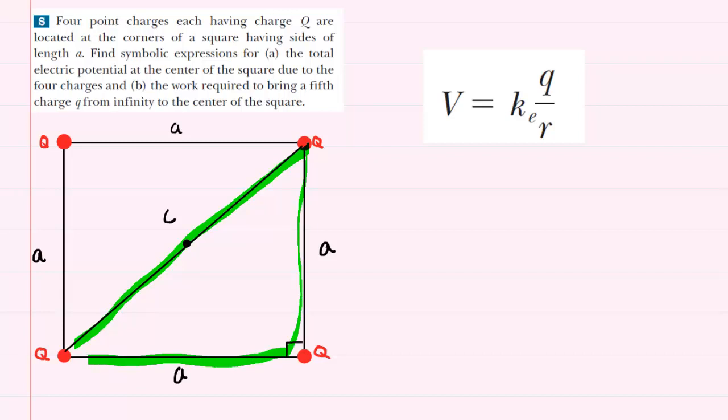Now of course we know from the Pythagorean theorem that C squared is equal to A squared plus B squared. The two legs of our triangle are noted as A and another A, so we can actually rewrite this as C squared equals A squared plus A squared.